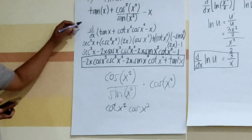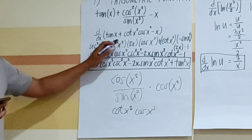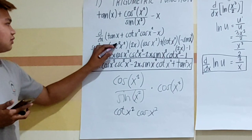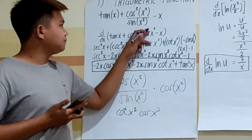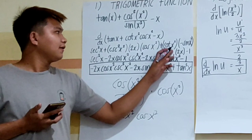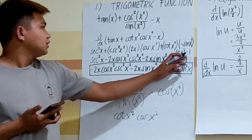The derivative of tangent(x) is equal to secant²(x). Plus the derivative of tangent(x²) times cos(x²), which is secant²(x²). The derivative of x² is equal to 2x. Then, the derivative of cos(x²) is equal to tangent(x²) times minus sin(x²). Then the derivative of x² is 2x.